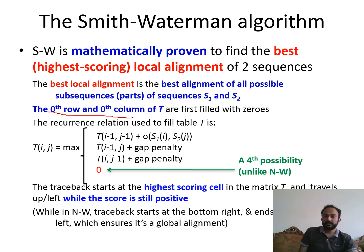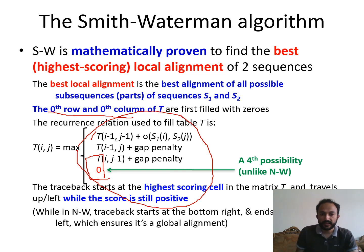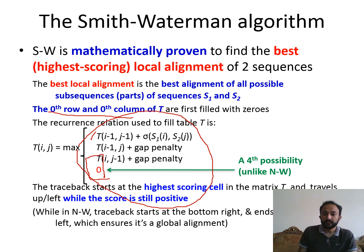The recurrence relation used to fill the table is very similar to what we did in global alignment. For diagonally adding matches and mismatches we use the diagonal equation; for adding gaps horizontally and vertically we use the next two equations. Unlike Needleman-Wunsch (global alignment), there is a fourth possibility: to identify regions which are distantly related and insert zero. If the value is going negative due to many gaps, we add zero instead. Traceback starts from the highest-scoring cell and moves back to the last cell that is still positive, whereas in Needleman-Wunsch we start from the bottom right and move to the top left.